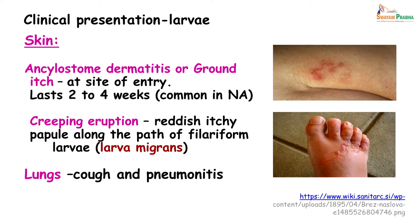You get something called Ankylostoma dermatitis or ground itch, which usually occurs at the site of entry and lasts for about 2 to 4 weeks. Although it is called Ankylostoma dermatitis, it is more common with Necator infections. The picture on the upper right shows what ground itch looks like. The next lesion the larvae can produce is called creeping eruption.